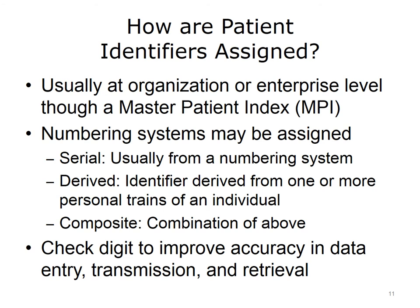In the U.S., patient identifiers are typically assigned at the organizational or enterprise level through a Master Patient Index, or MPI. These usually use some sort of identifier scheme that may consist of numbers and letters, assigned serially from a numbering or lettering system. Alternatively, the identifiers may be derived from one or more personal traits of an individual, or there might be a composite combination of both. There is also usually a check digit used to improve accuracy in data entry, transmission, and retrieval.